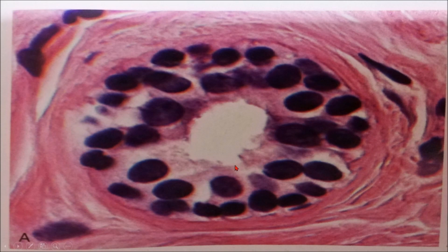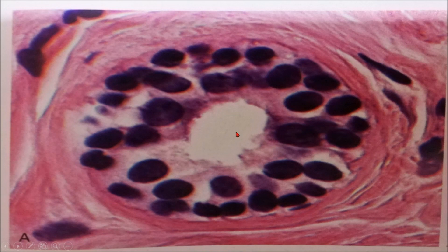The normal epithelium of the acini of the breast consists of two types of cells: myoepithelial cells and luminal cells. Myoepithelial cells have dark, compact nuclei with scanty cytoplasm and form a single layer. Luminal cells have large nuclei with small nucleoli and abundant cytoplasm, forming another single layer. Together they surround the lumen of the acini of the breast.